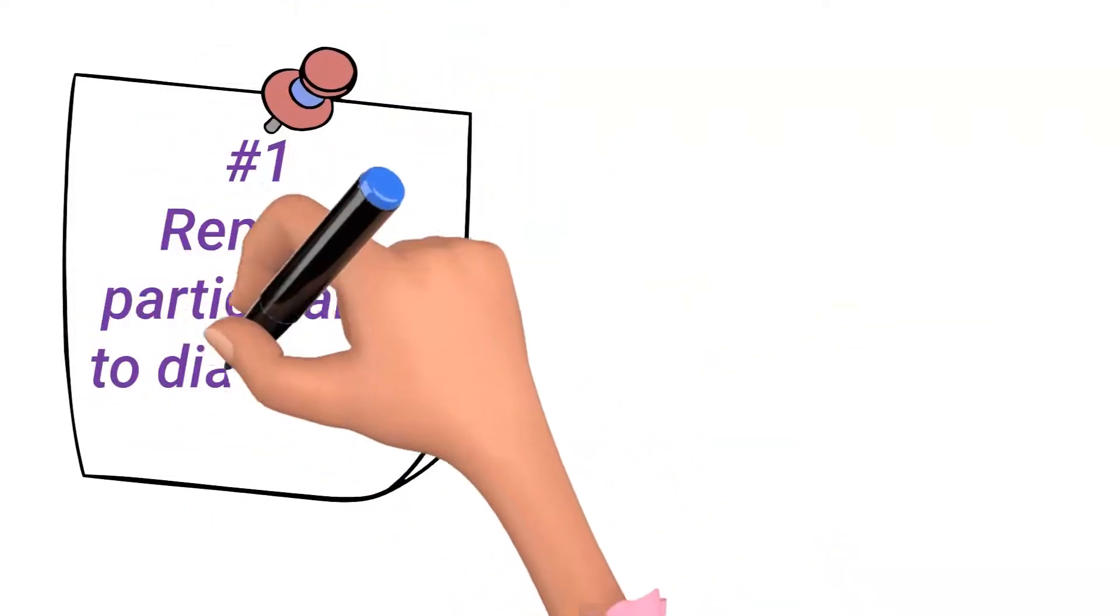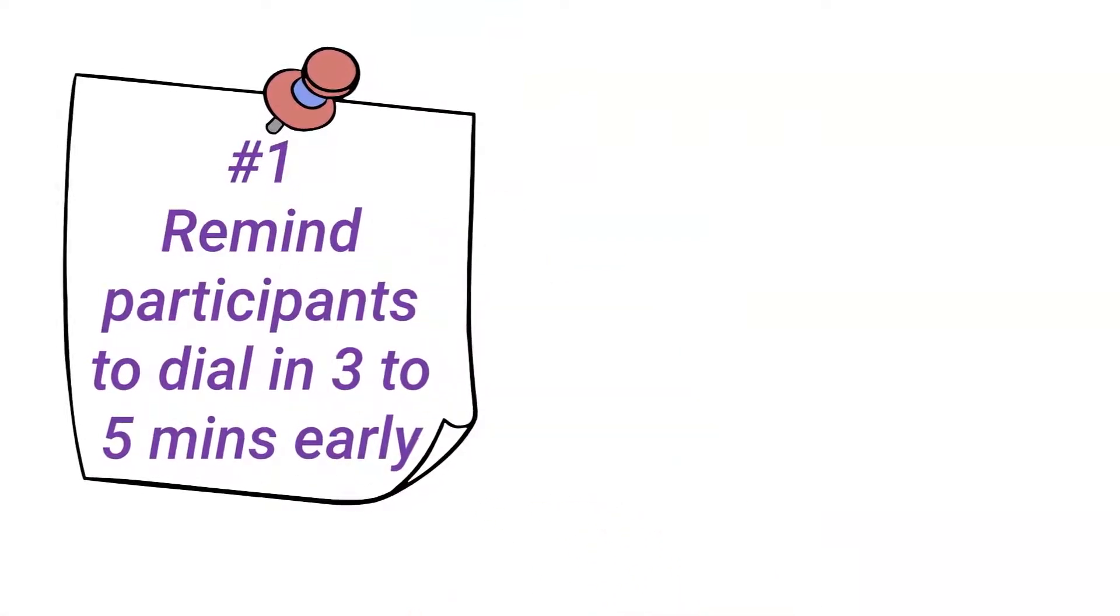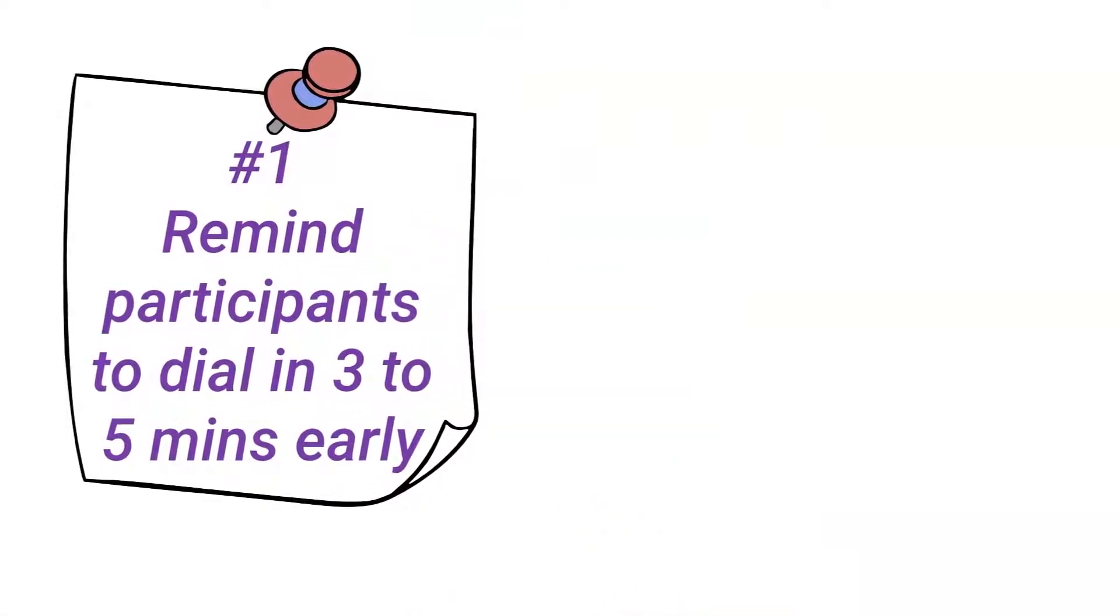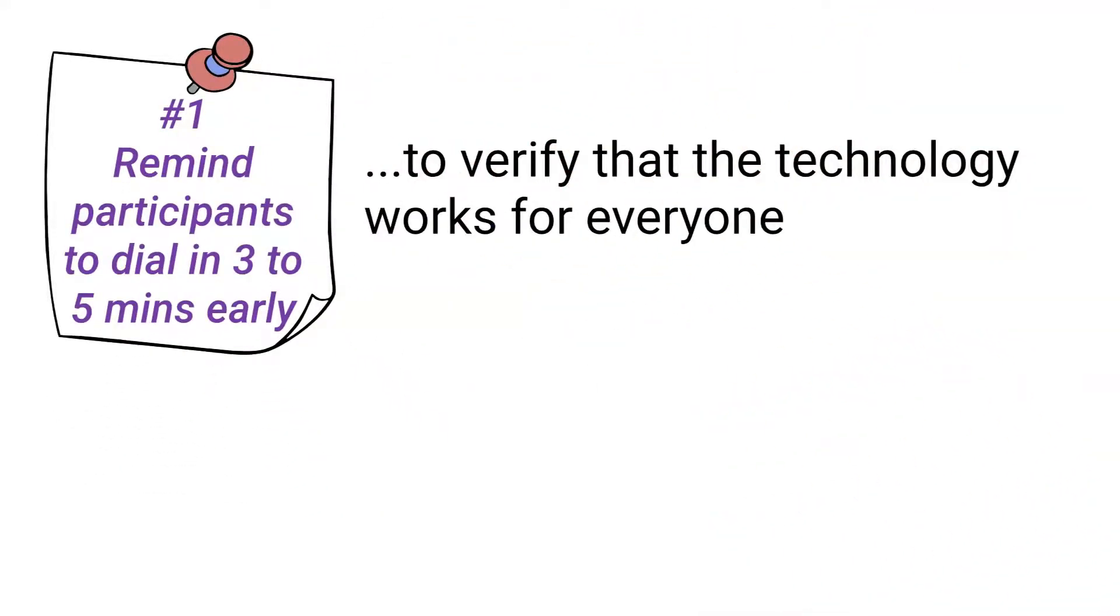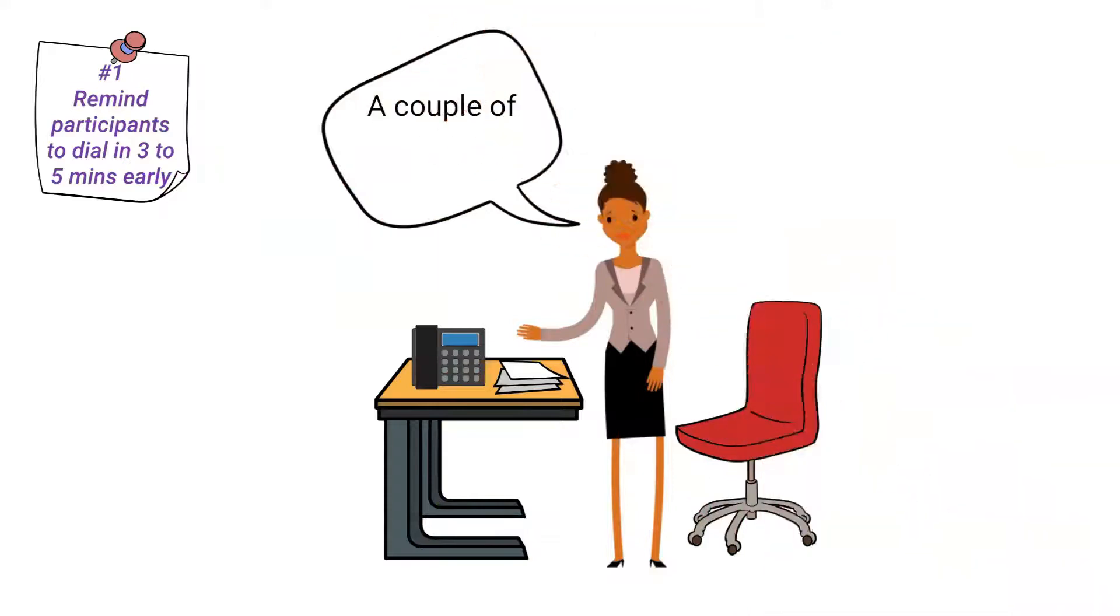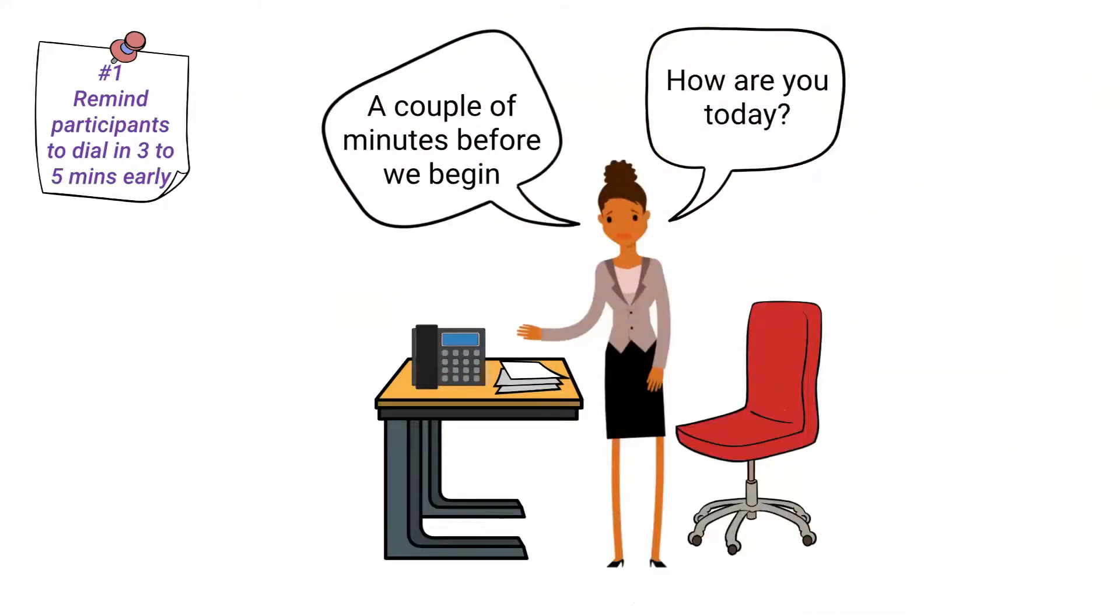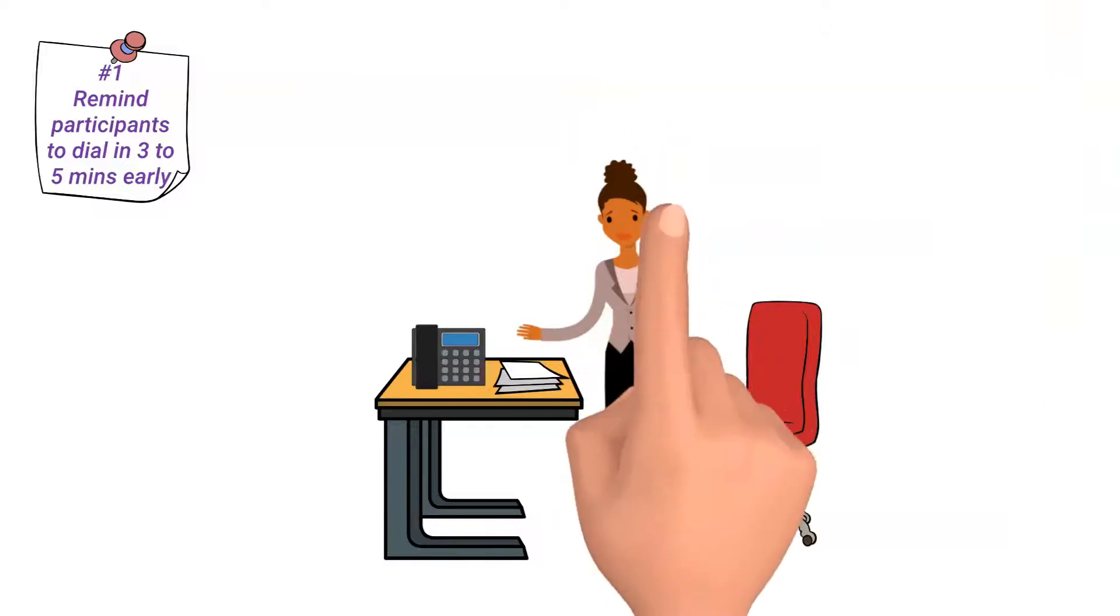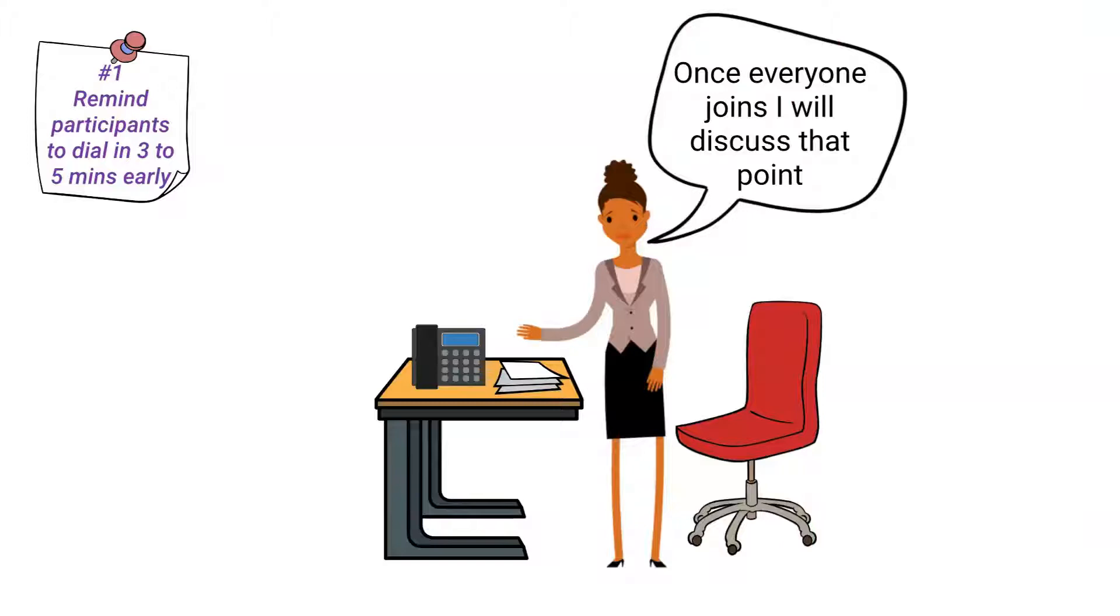Number 1. Remind participants to dial in three to five minutes early. This conference call meeting etiquette rule allows you to verify that the technology works for everyone and allows you to break the ice with those who are waiting for the others to join. A tip here is to resist the urge to discuss anything on the agenda. All participants should be present before any agenda item is discussed.